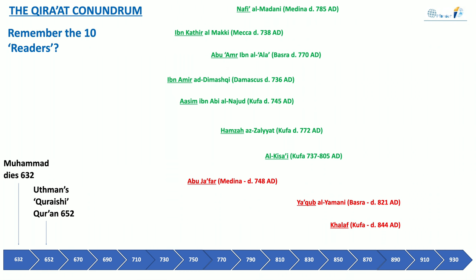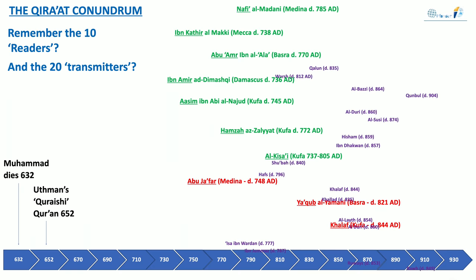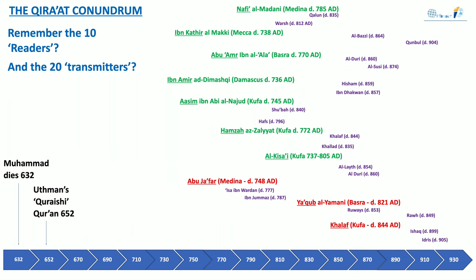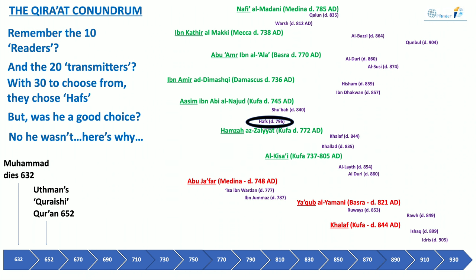So what we want to do is go to the slide now and look at the Qiraat Conundrum. If you've been following our series, you'll remember the 10 readers — the green seven and the red three — introduced in the 8th century, from 736 up until 844. Then you have the 20 narrators in purple. The one I really want to show you is Hafs, now circled in black. Was he a good choice? The answer is no. Here are five problems.